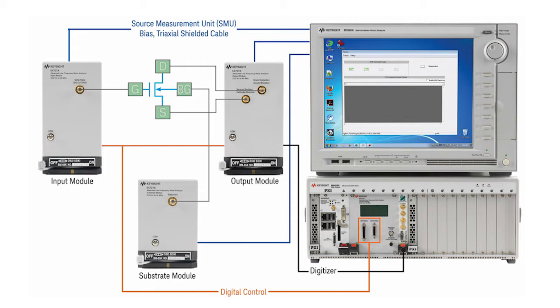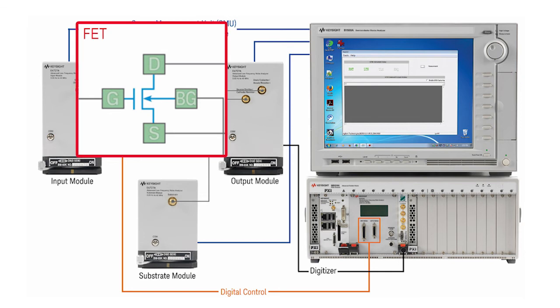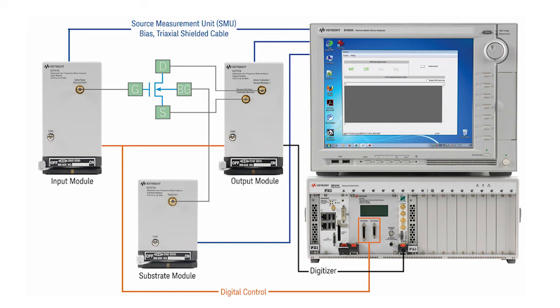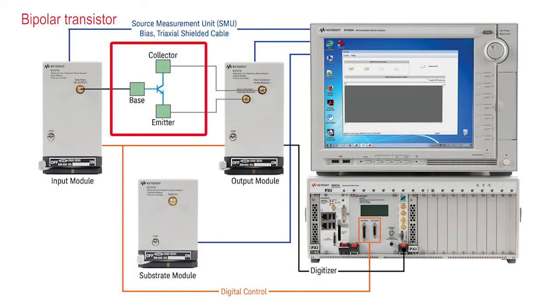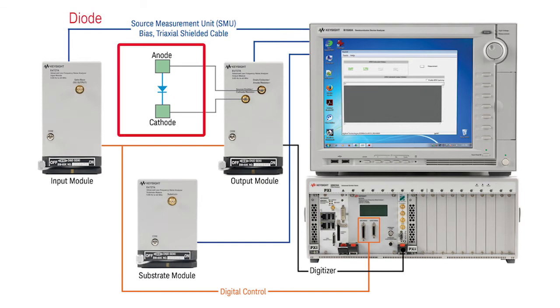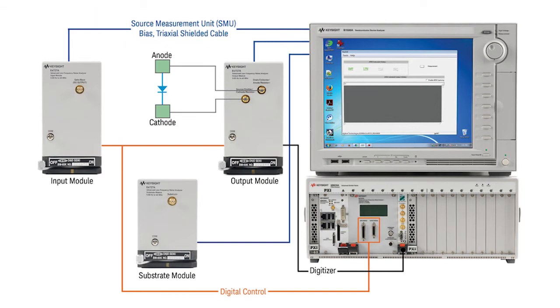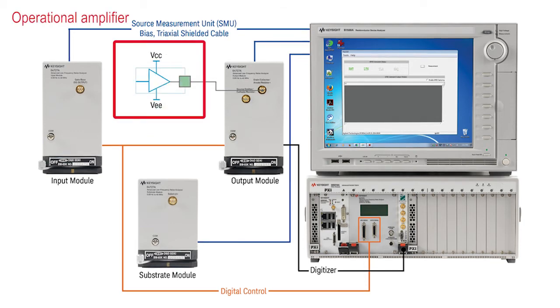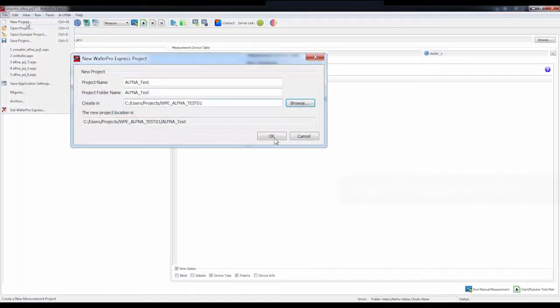Here, we see how the output module may be connected across the drain and source of a FET. It may be similarly connected across the collector and emitter of a bipolar transistor, anode and cathode of a diode, the two terminals of a resistor, or the output terminals of an operational amplifier IC.